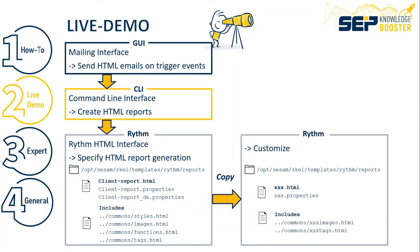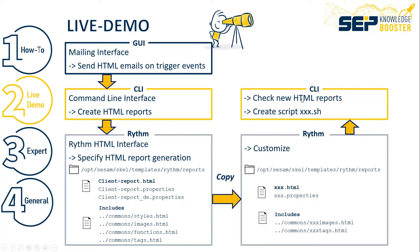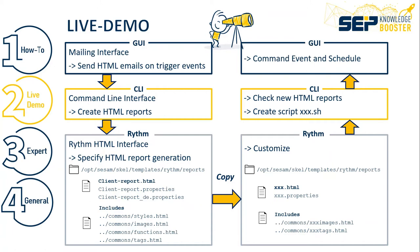We will copy the client report and give it a new name: 'xxx'. We'll adapt that file, copy the properties file for labels and strings, copy the image file because we'll enter a new image, and copy the text file where the image is used. We'll adapt those two files and include them in the xxx HTML file. Then we'll create the report, check it, send it via email, and run it as a command event on a schedule.